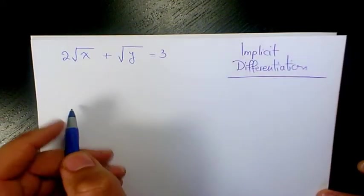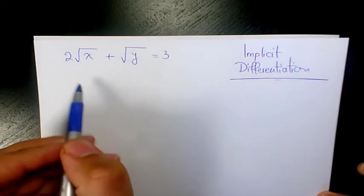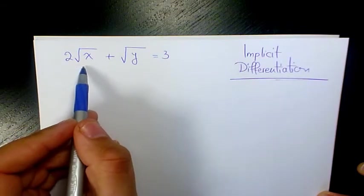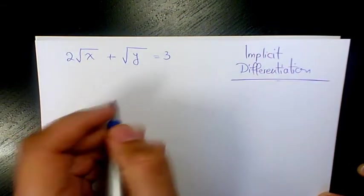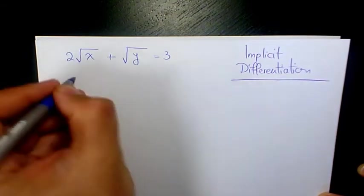What's up guys, this is Massy. Welcome to another video. In this video I want to find out the derivative of this expression: 2√x + √y = 3, and we need to use implicit differentiation. We need to find dy/dx.